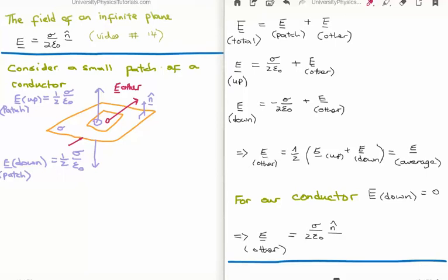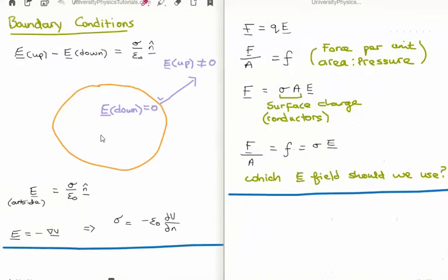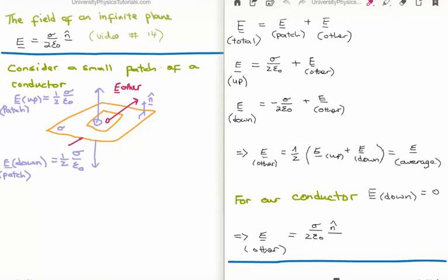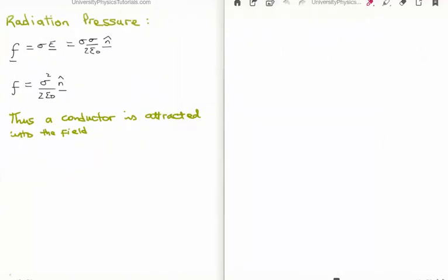For this particular conductor — a large, solid body — the electric field below, or the electric field down, is zero. This means the other electric field is sigma over twice epsilon zero n hat. So the force per unit area, the pressure on a conductor due to an electric field, equals sigma times the average electric field, giving sigma squared over twice epsilon zero n hat. This means that a conductor is attracted into a field.